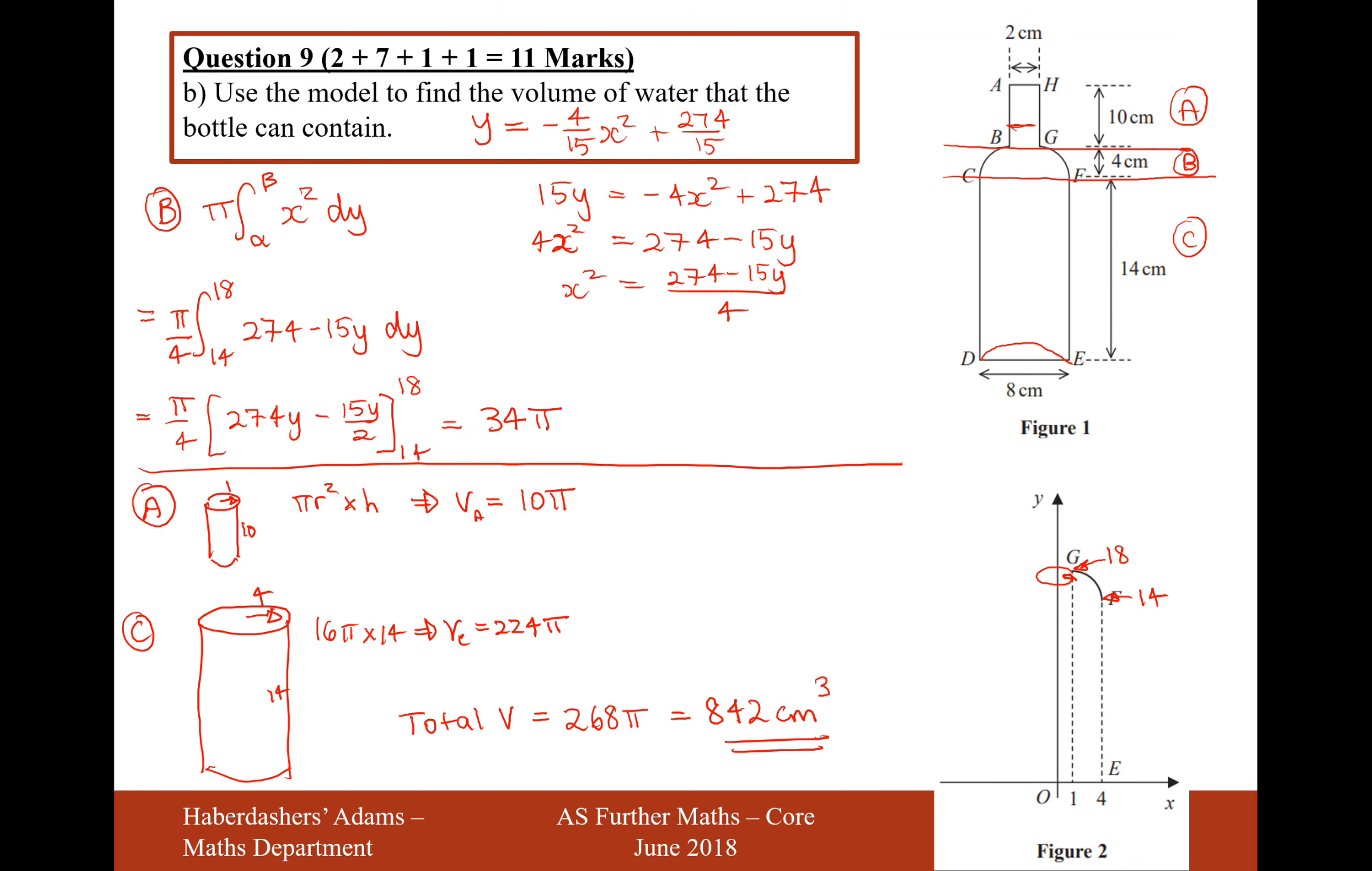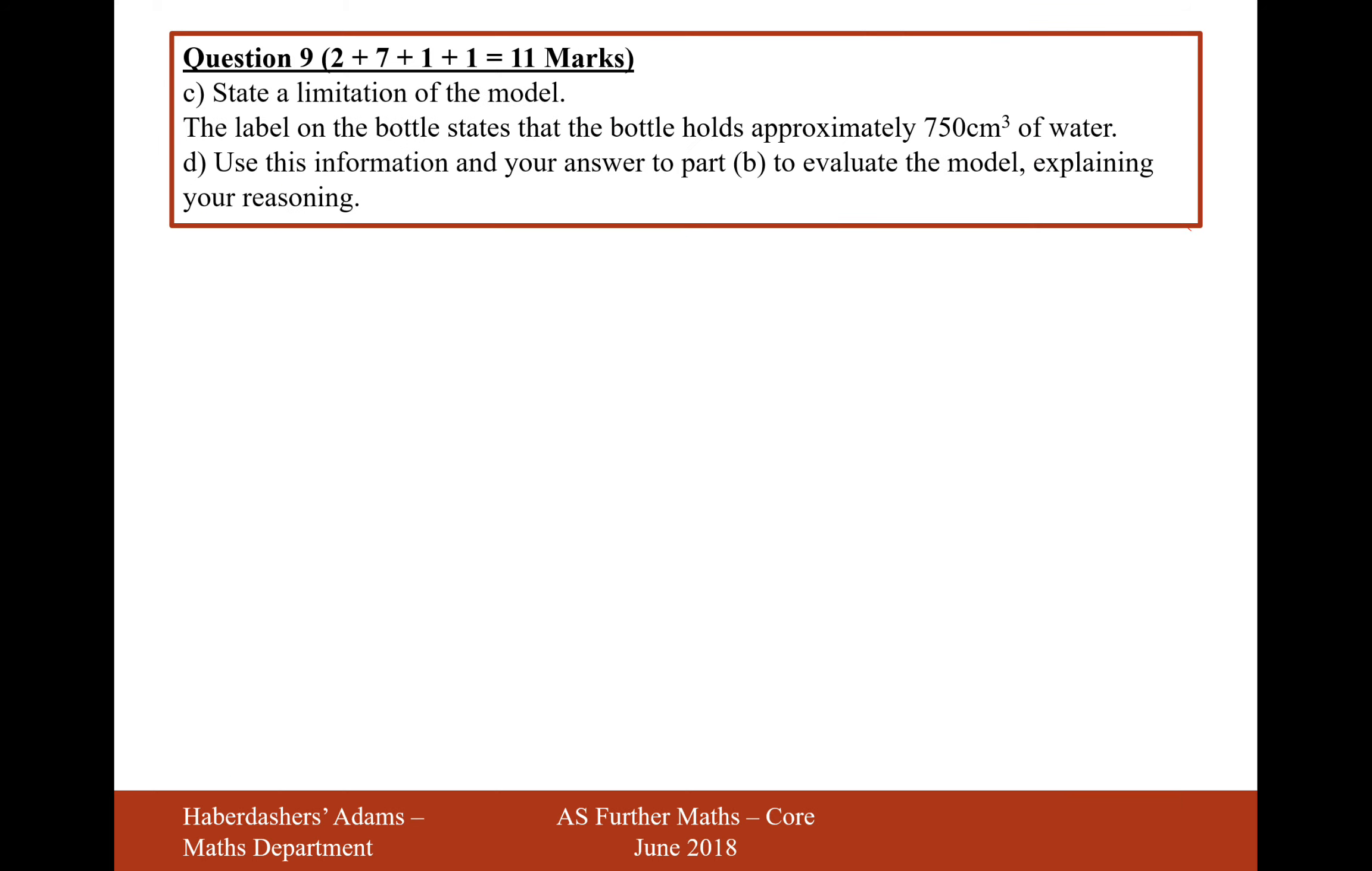Well, if we go back, the actual volume is 842, which is quite some way off 750, 92 centimetres off in fact. And if we look at how much the neck contains, that's just going to be 30 centimetres cubed, approximately 31 centimetres cubed, which is going to be meaning that the bottle of water will start on the quadratic bit, which is unreasonable. So just write a sentence to that effect there.